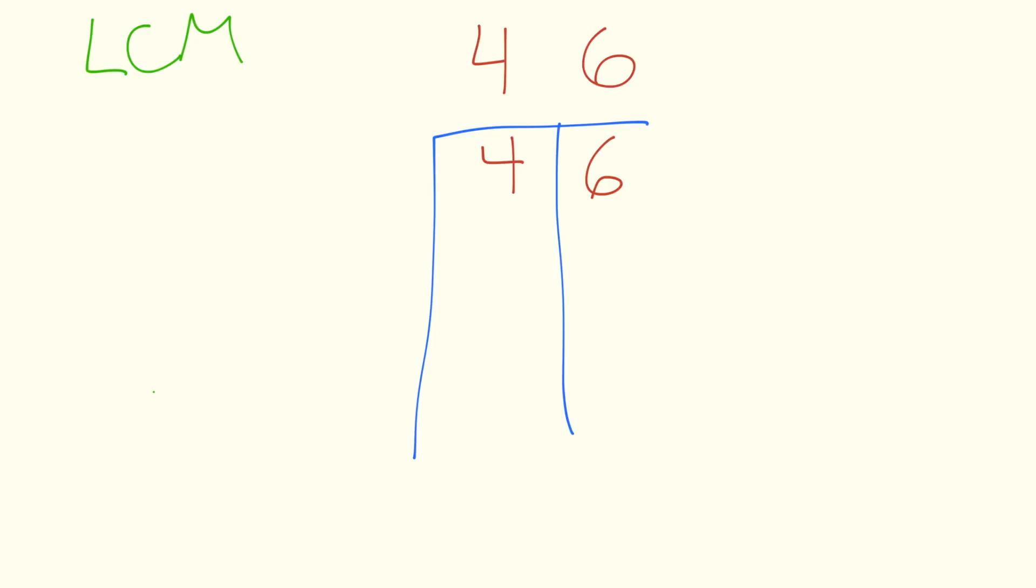The steps to this technique are always, let's find the smallest prime number that goes into at least one of the numbers in the columns. Looking at the first row, what's the smallest prime number that goes into either 4 or 6? After a little bit of thought, you'll come up with the number 2.